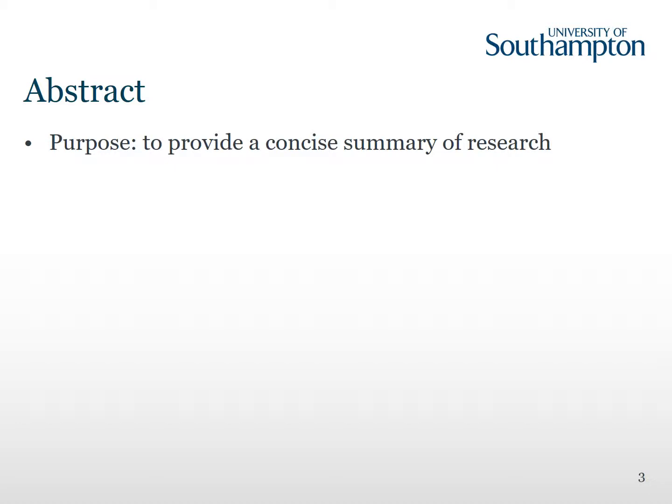First of all, the abstract. The purpose of the abstract is to provide a concise summary of the research. When you read a paper, you often go straight to the abstract, and that might be the only thing you read about that paper. You read it to try and work out whether it's relevant, whether you need to read it further, or whether it gives you enough information for what you wanted.